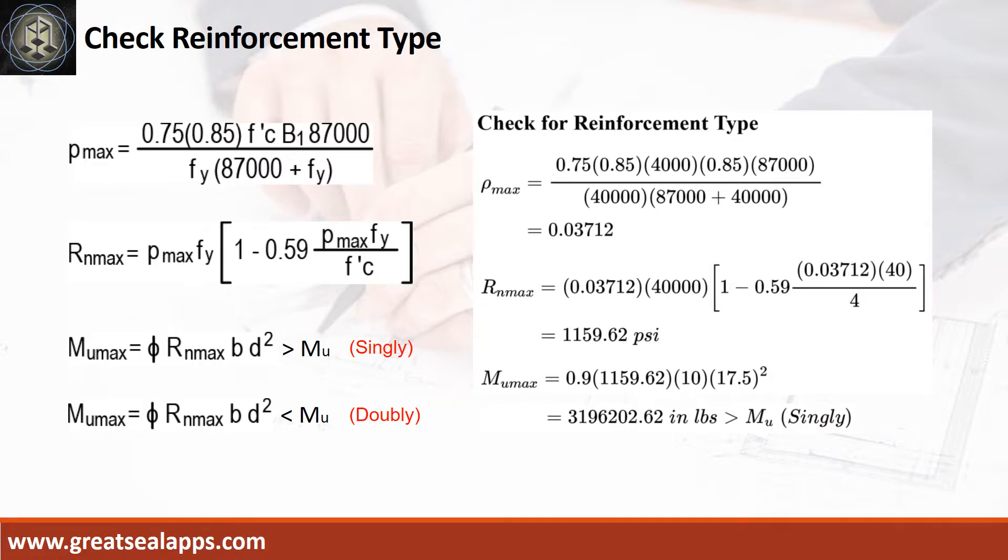The ρmax from the given design criteria is 0.03712. Then the maximum concrete beam design ratio Rnmax equals 1,159.62 psi, followed by maximum moment from given section Mumax equals 3,196,202.62 inch-pounds, which is greater than maximum design moment Mu.